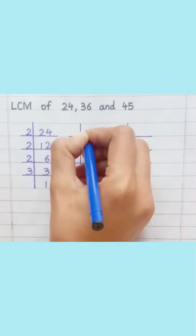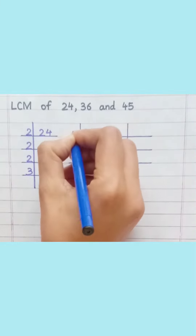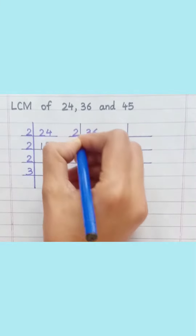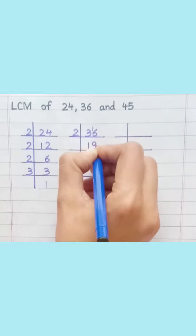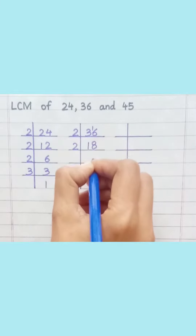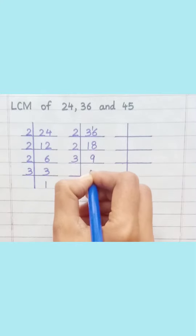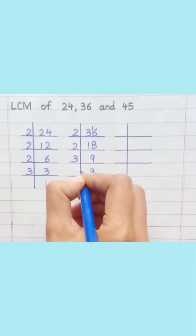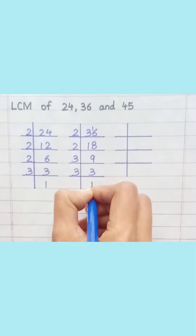36: 2 1s are 2, 2 8s are 16, 2 9s are 18, 3 3s are 9, 3 1s are 3.